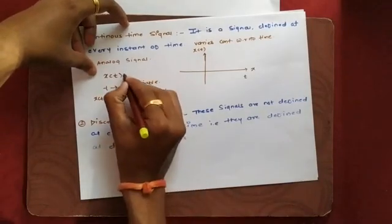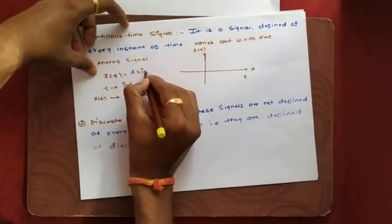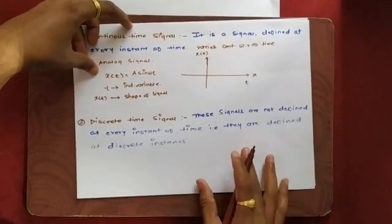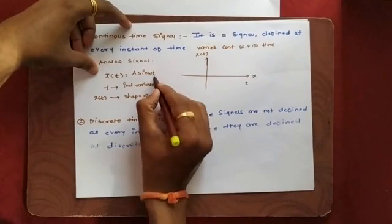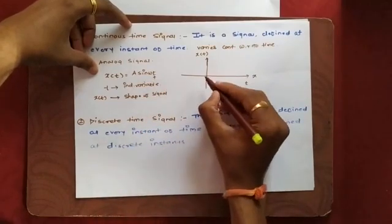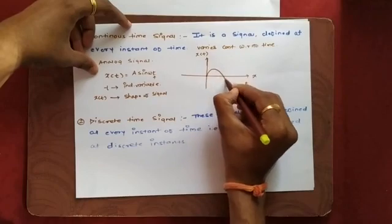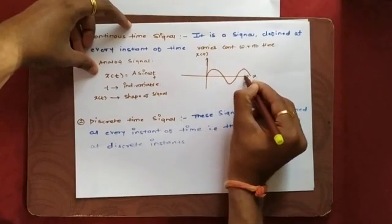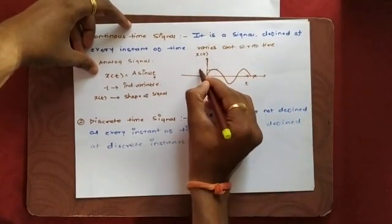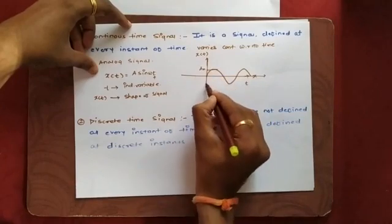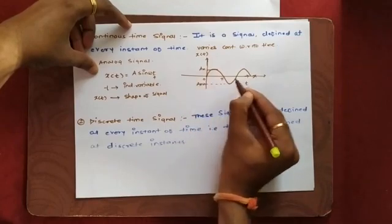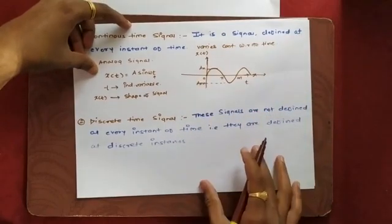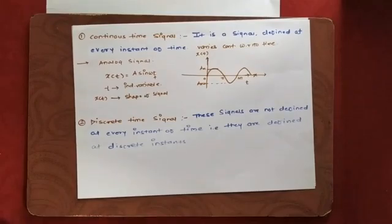For example, let us assume we have a sinusoidal signal: x(t) = A sin(ωt). This is a continuous time signal — it is a function of t. If I plot this we get a sinusoidal waveform, where the maximum amplitude is A-max and the minimum is A-min. The x-axis shows values 0, π, 2π, and so on. Such kinds of signals are known as continuous time signals.